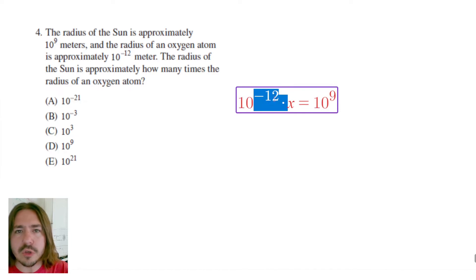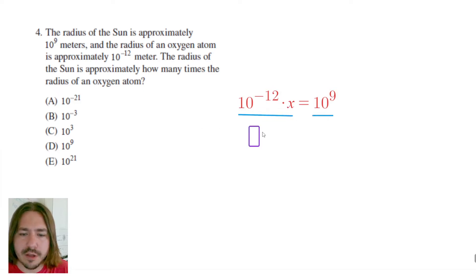Now one thing to keep in mind here is that if we're trying to solve for X, we've got something times X equals something else. And so we can use what is known as the multiplicative property of equality. That basically allows you to perform any operation to an equation as long as you perform the same operation to both sides. So what I'm going to do here is divide both sides by 10 to the negative 12th.